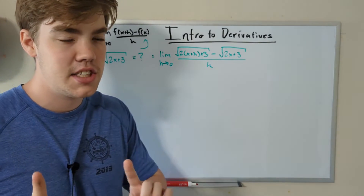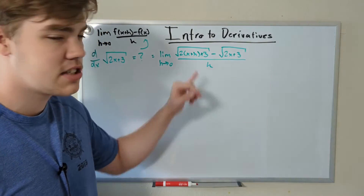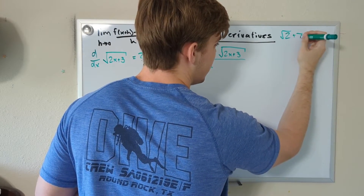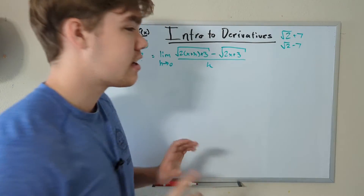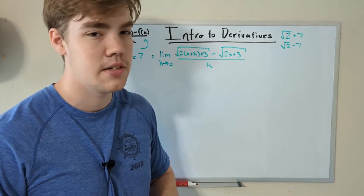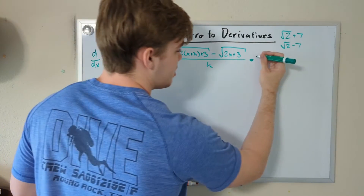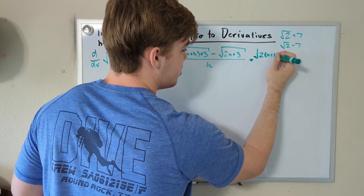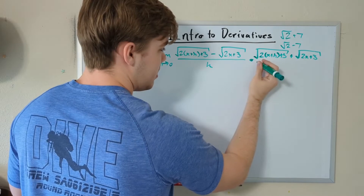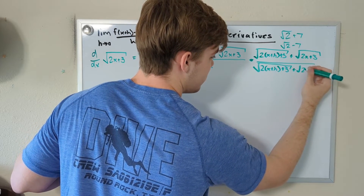It may look like we're stuck here, but we can use a strategy from limits — solving by rationalizing. We can multiply this function by the conjugate in order to solve this equation. If we had something like square root of 2 plus 7, the conjugate would just be square root of 2 minus 7 — we just replace the middle sign with the opposite. We're going to multiply this whole equation by the conjugate of the numerator: square root of 2(x+h)+3 plus square root of 2x+3, over the same thing on the bottom. Since it's the same value on top and bottom, it's essentially multiplying by 1.